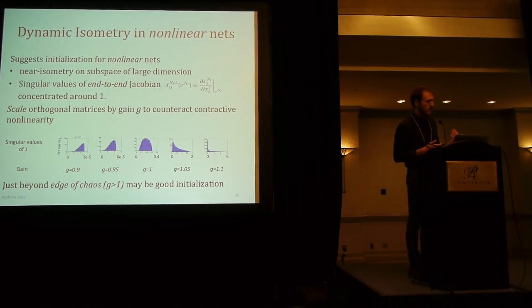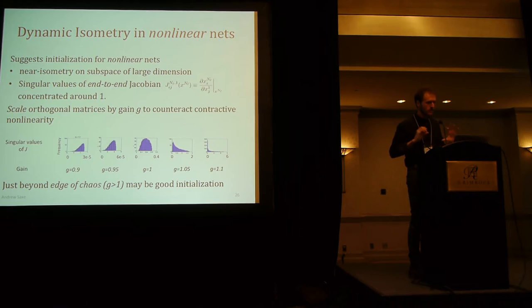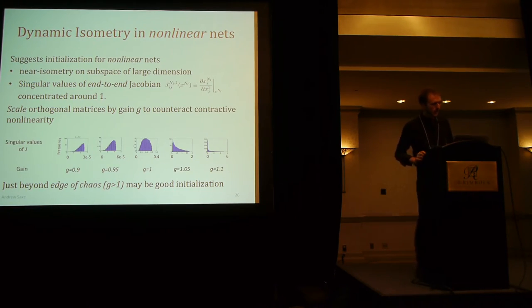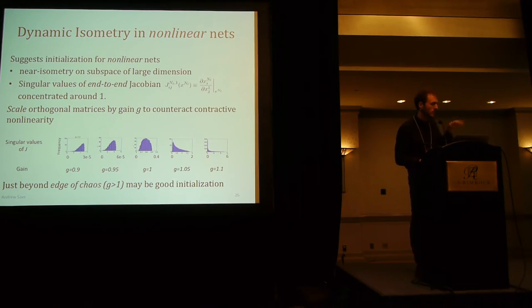What would be a good initialization? Maybe a near isometry on a subspace of as large a dimension as possible. This means if you take the end-to-end Jacobian of your deep non-linear network, you want as many singular values as possible concentrated near 1 — so inputs are faithfully propagated to outputs. This is also related to the propagation of gradients. We'll try a simple approach: just scale a random orthogonal matrix by a gain G.